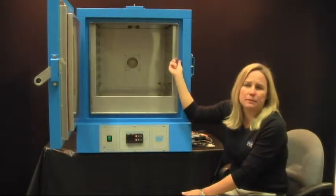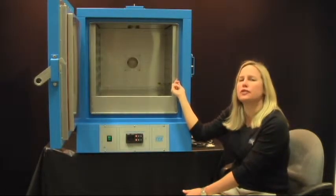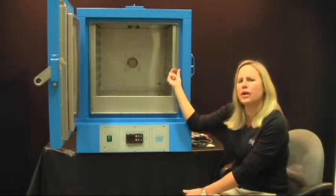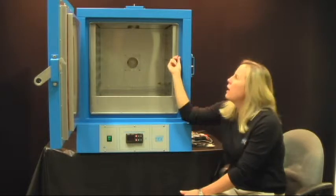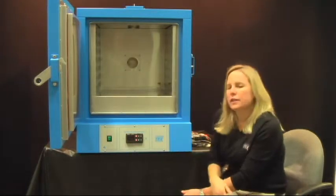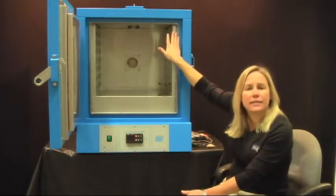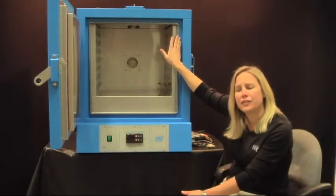This door gasket here is really only comfortable with about 235 degrees C. Is that right, Catherine? That's right. It's silicone. So, the oven will come with a door gasket that can take about 235 degrees C.